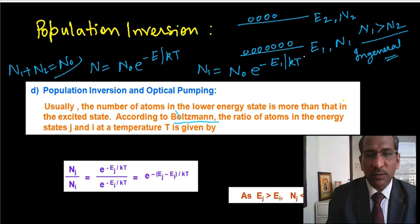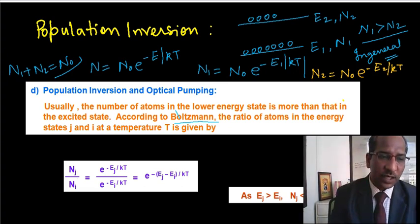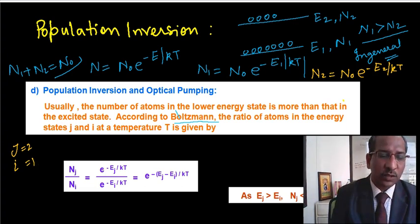So I can write it here: N1 plus N2 equals N0. Similarly one can write for N2, so N2 equals N0 e raised to power minus E2 upon kT. So now you have an idea of the Maxwell Boltzmann distribution law and how one can write this. Here J and I actually represent the second and the first state: J equals 2, I equals 1. So don't confuse with these notations.